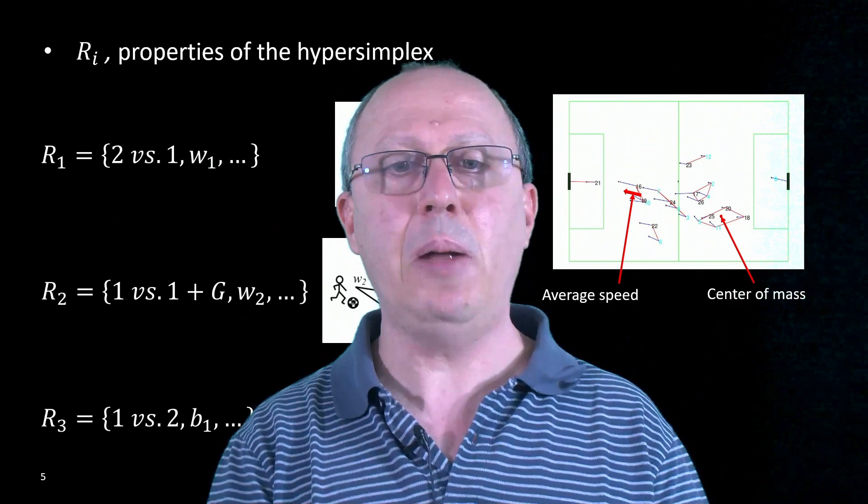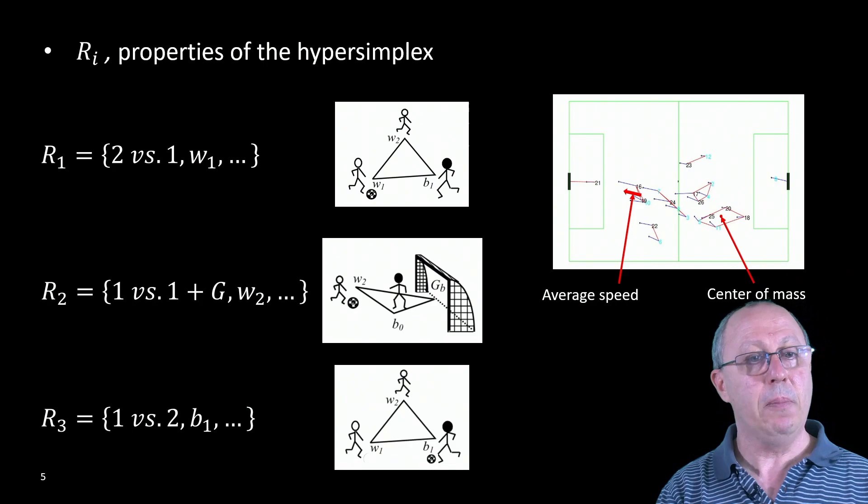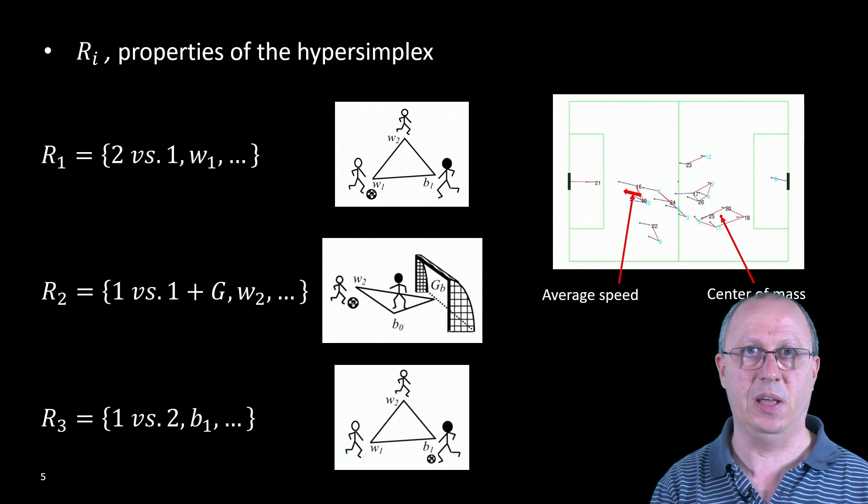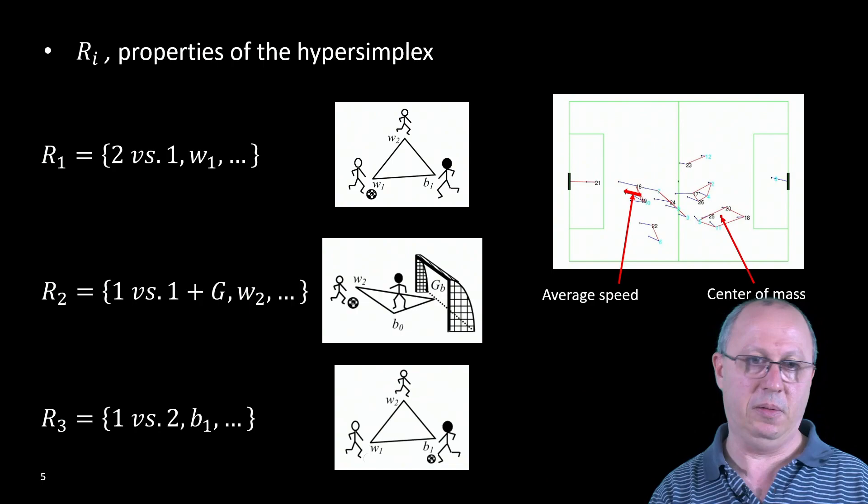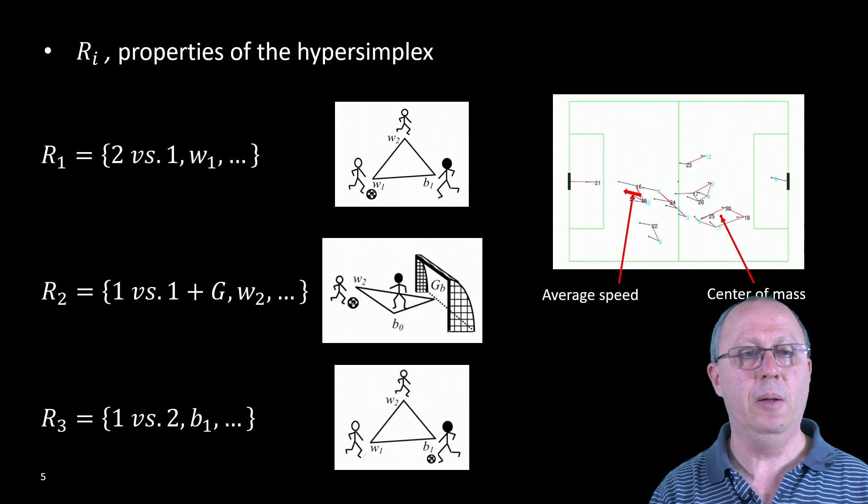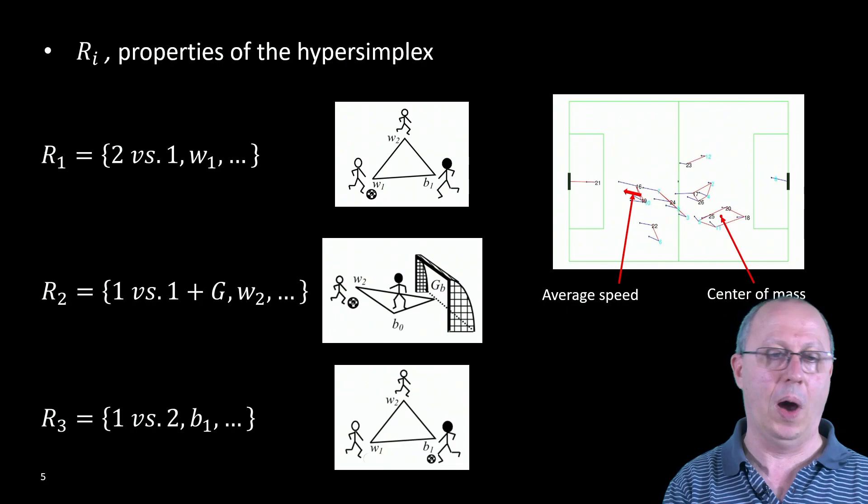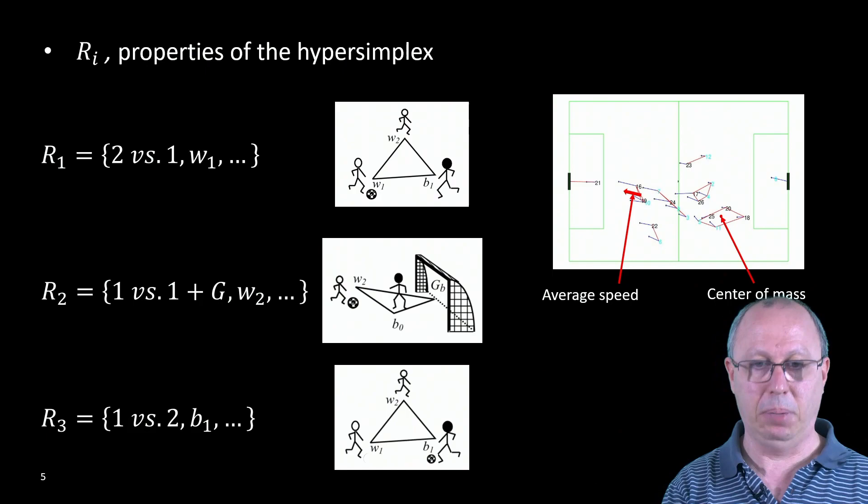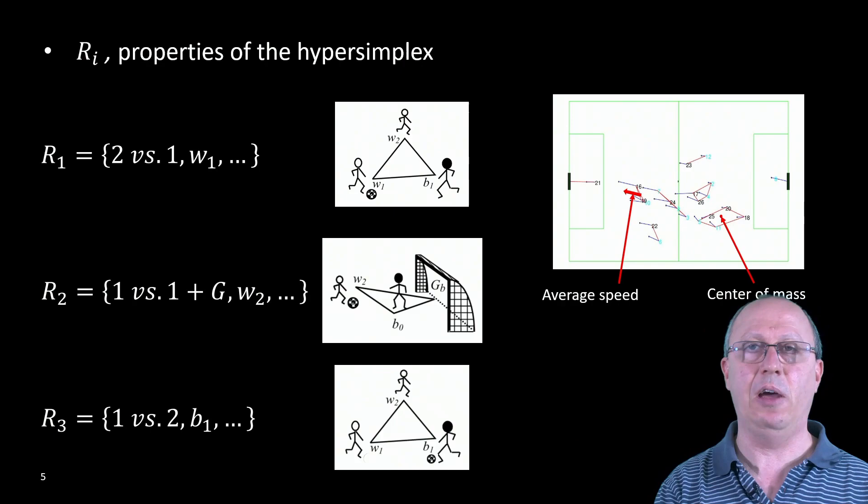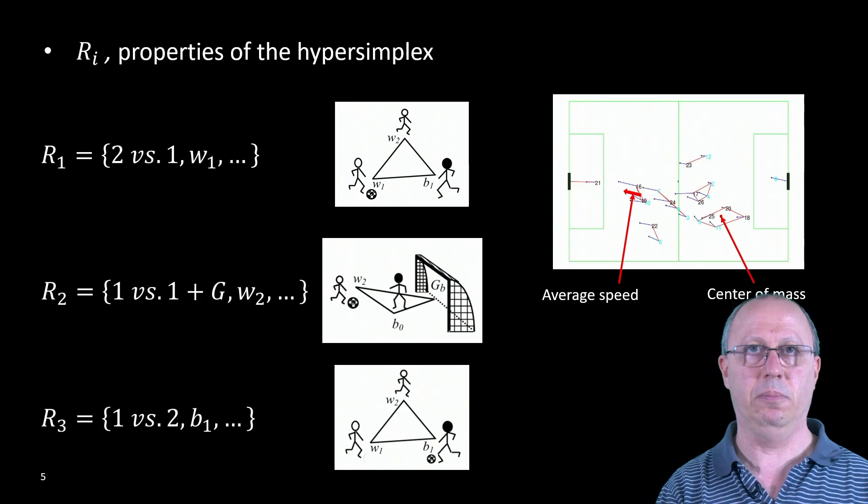On the other hand, an hypersimplex is also characterized by the relationships between their elements. Here, although simplex sigma 1 and sigma 3 have the same elements, they are different in the relationships that they present and this difference is based on ball possession. In the case of the relationship R1 the possession is with the team white and in R3 the possession is with the team black. My colleague João Paulo Ramos will explore how we have been studying this relation and other relationships to characterize the match dynamics.